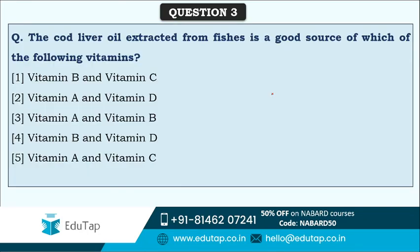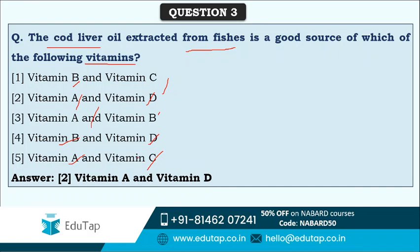Third question: cod liver oil extracted from fishes is a good source of which of the following vitamins? One information we have from the question itself is that cod liver oil is extracted from the liver of fishes. Options are Vitamin B and C, A and D, A and B, B and D, or A and C. The correct answer is option two - Vitamin A and Vitamin D. Cod liver oil is a good source of Vitamin A and D.